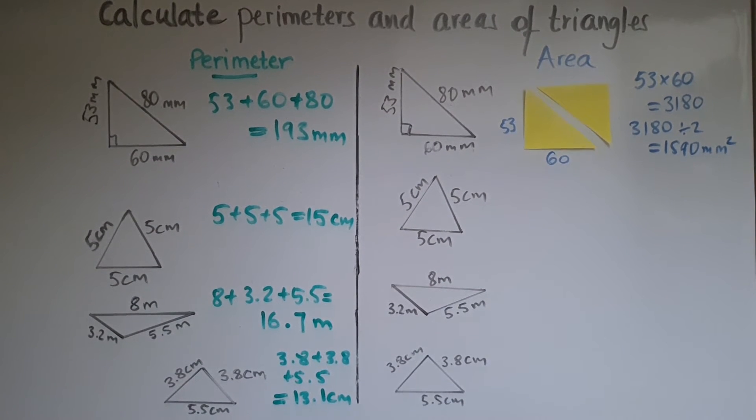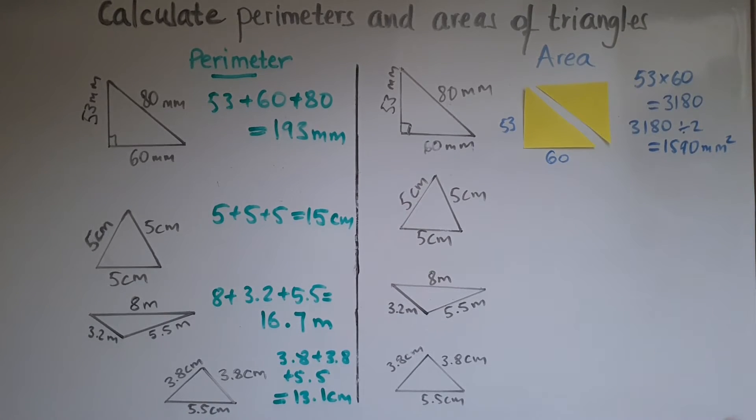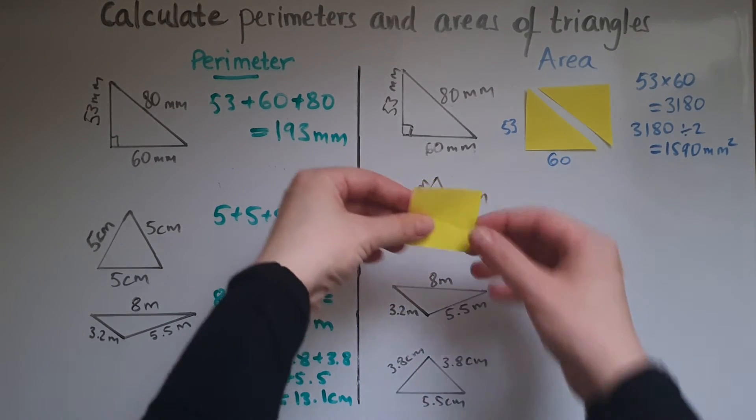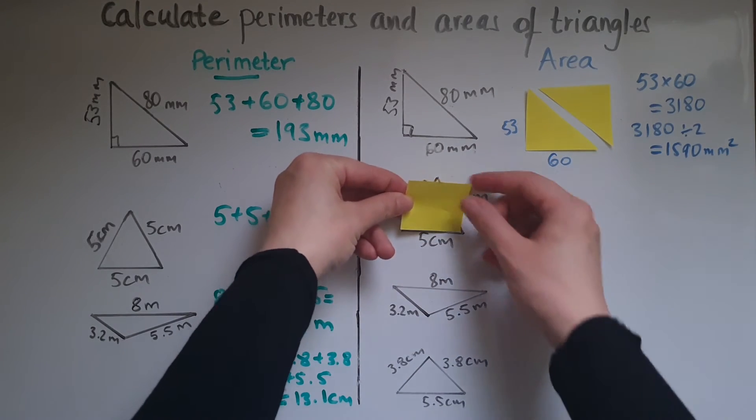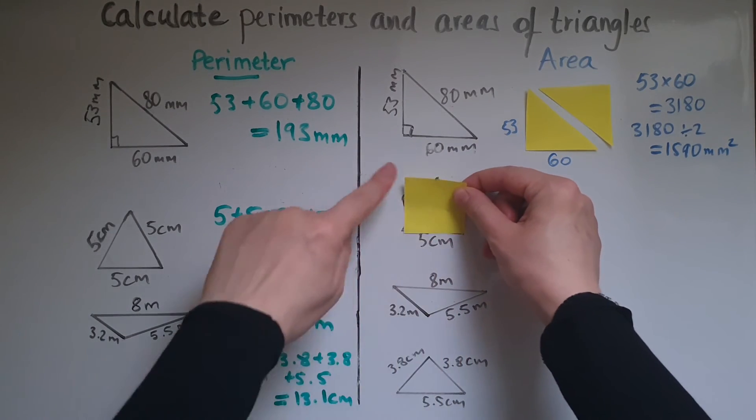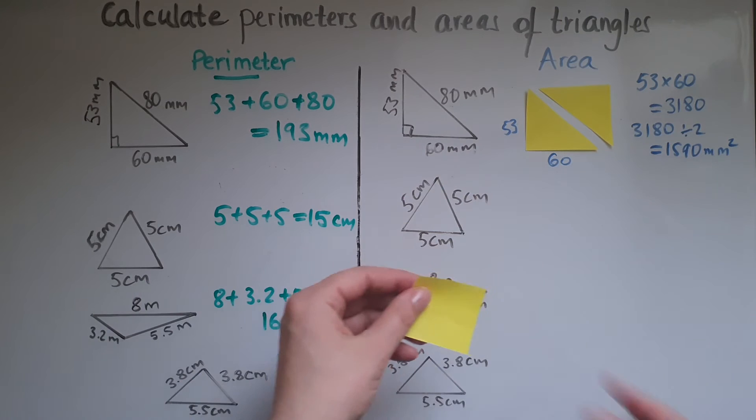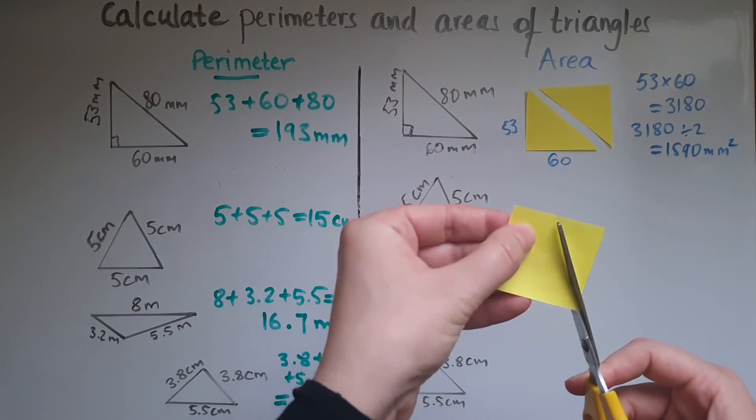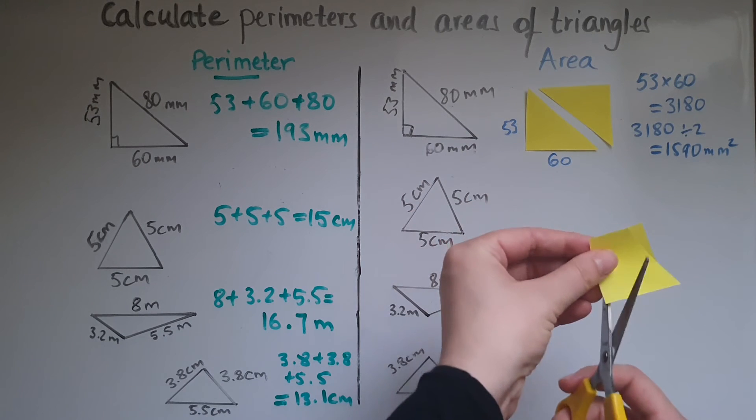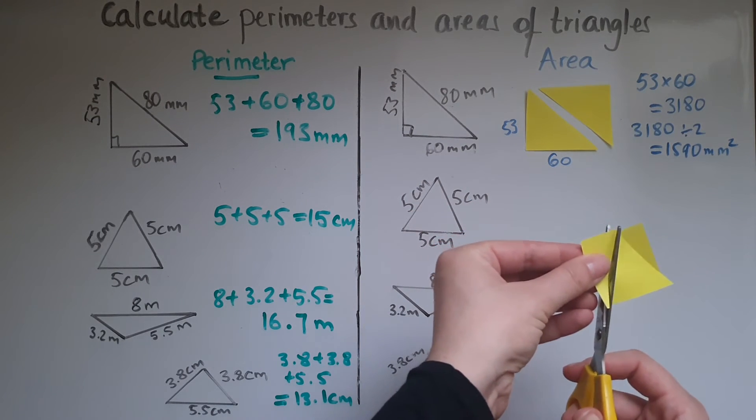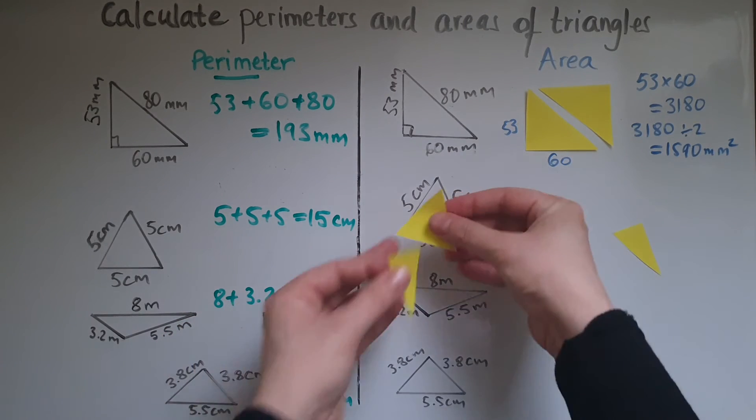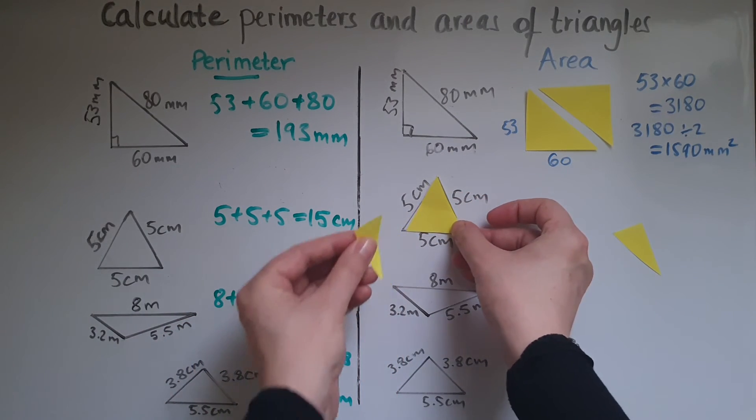The same thing is applied with the other triangles. So I'm going to very quickly demonstrate again. We have this rectangle which has the same length and the same height. So we'll cut it quickly so that we can see that that would make two triangles.